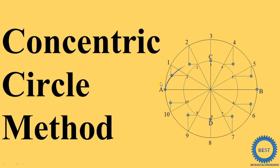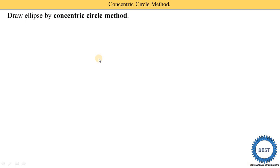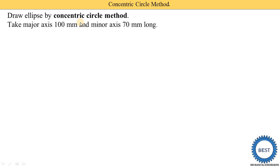In this video I explain how to draw an ellipse by using the concentric circle method. First we understand the problem statement: we need to draw an ellipse by using the concentric circle method, taking the major axis as 100 mm and the minor axis as 70 mm long. We will solve this problem step by step.